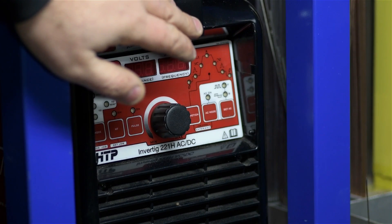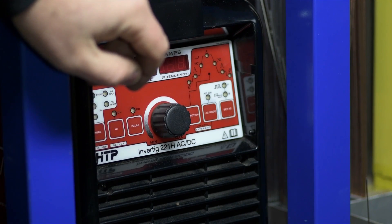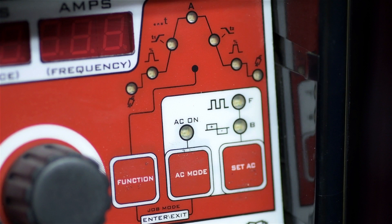modern TIG welders like this one give you a lot of control over the output waveform, give you a lot of control over what the arc is doing at the end of the torch. Why they do that is another can of worms, but for now, allow me to give you the executive summary.